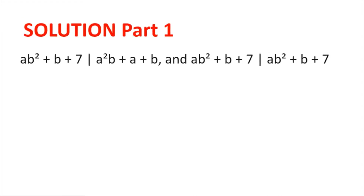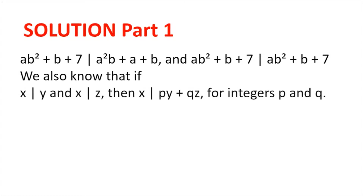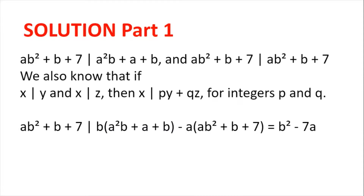Solution. We know that ab² + b + 7 divides a²b + a + b from the question, and ab² + b + 7 divides itself since that expression is not equal to 0. Using the rule that x divides py + qz, and setting p = b and q = −a, we get that ab² + b + 7 divides b(a²b + a + b) − a(ab² + b + 7), which simplifies to b² − 7a.